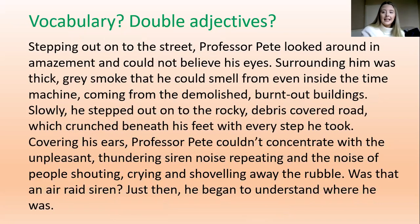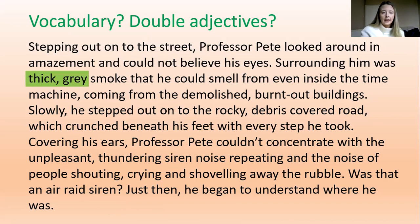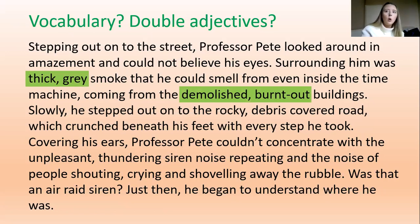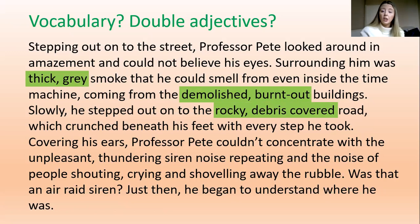Using exactly the same paragraph I wrote before, I want you to skim through and see if you can find any double adjectives, or maybe a word you really like that I've been able to up-level. Hopefully you were able to spot some. Firstly, I've got 'thick, grey smoke' - I'm describing the smoke, thick and grey. Next, 'demolished, burnt-out buildings' - they're not just normal buildings, they've collapsed, the bomb has really destroyed them. That is why we are using adjectives to describe the building. I've also used 'rocky, debris-covered road' to describe the road.